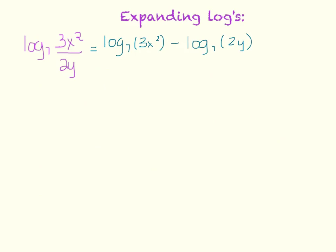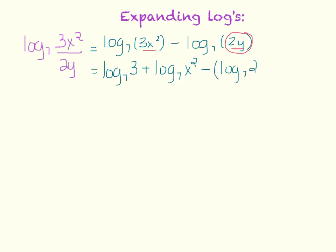Now I'm going to expand the multiplications into additions. I get log base 7 of 3, and since things that are multiplied separate by addition, log base 7 of x squared. Then I subtract — and I have to be careful here because I'm subtracting two terms, so the subtraction distributes to both. So I subtract the quantity log base 7 of 2 plus log base 7 of y, because those were multiplied together in the denominator.